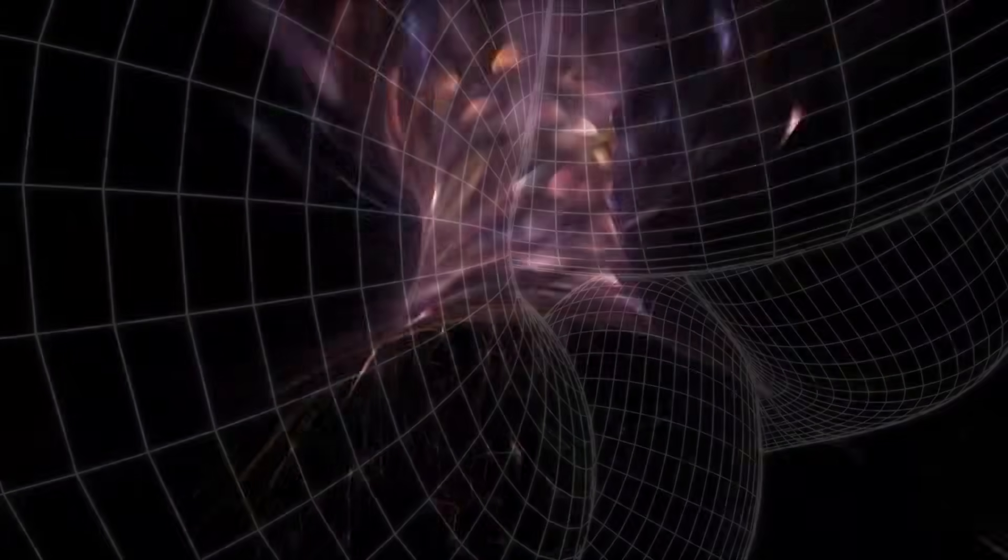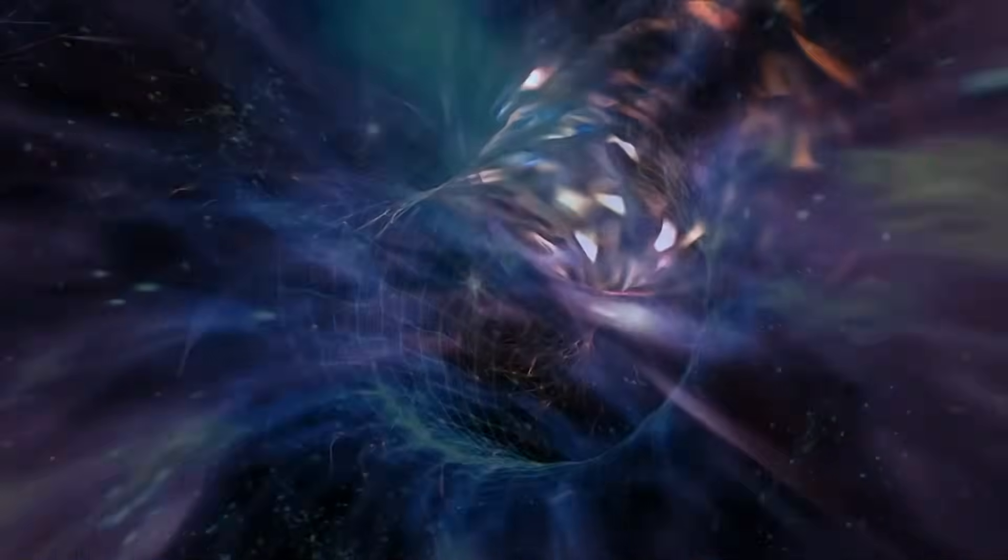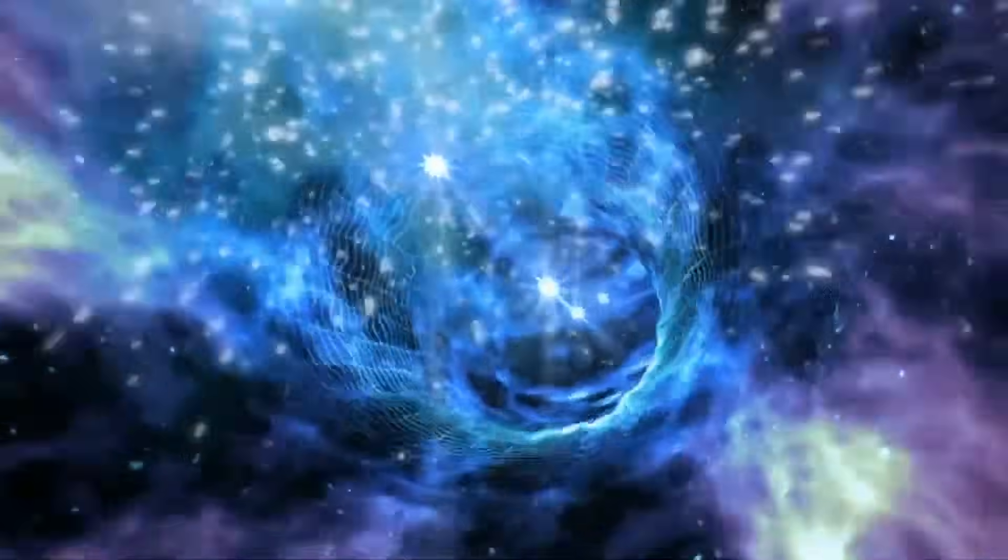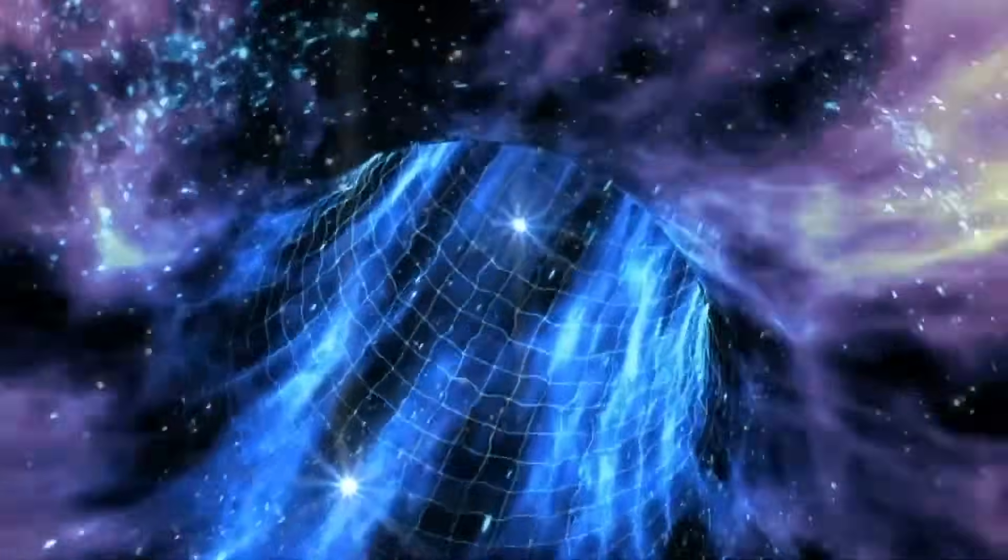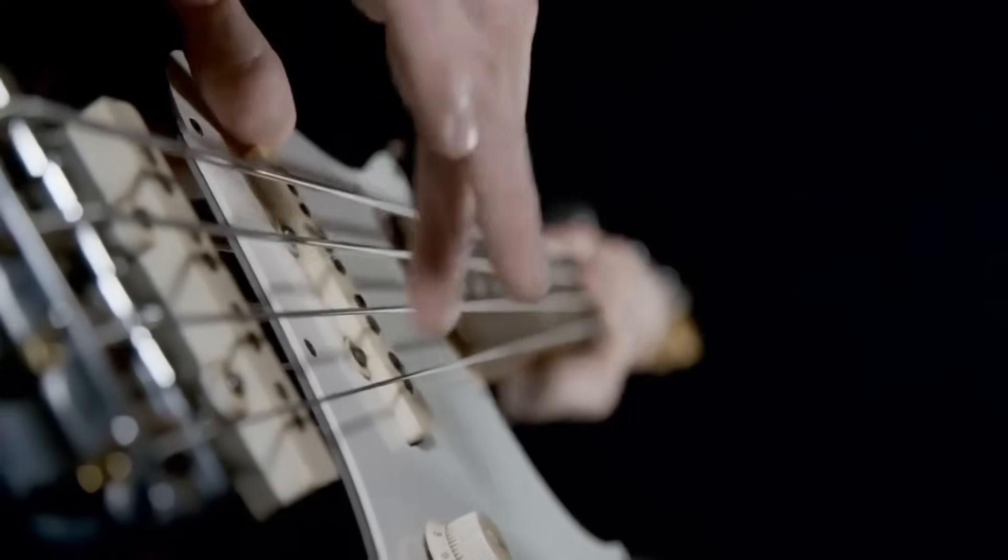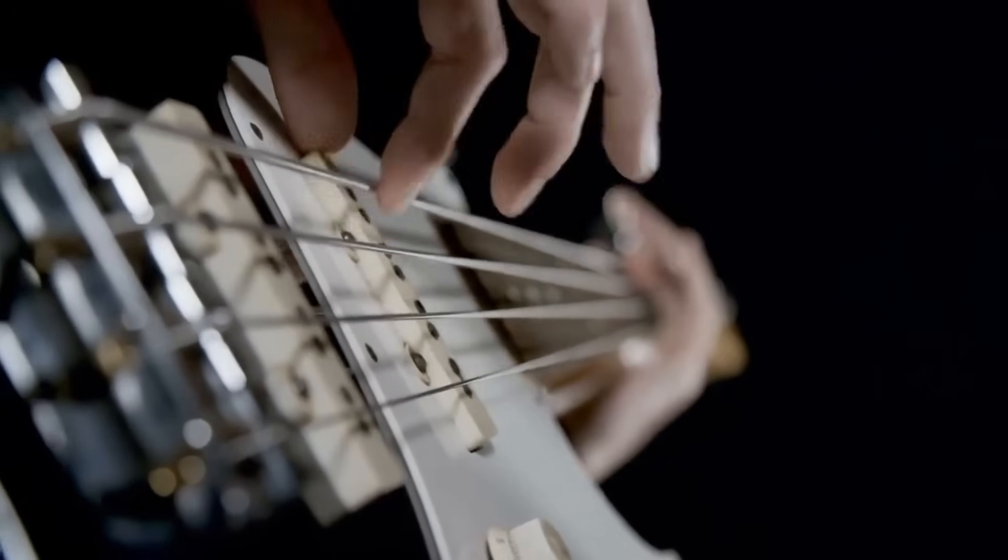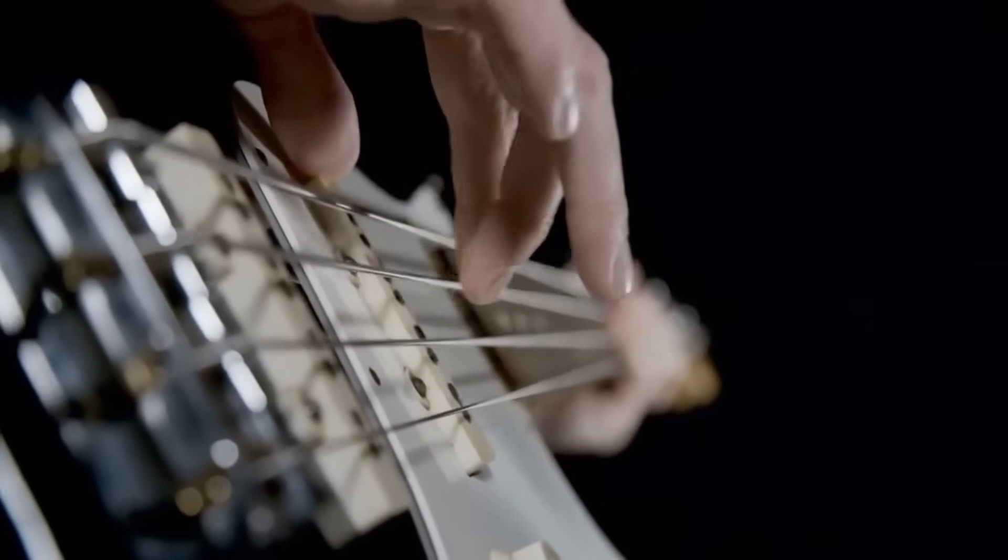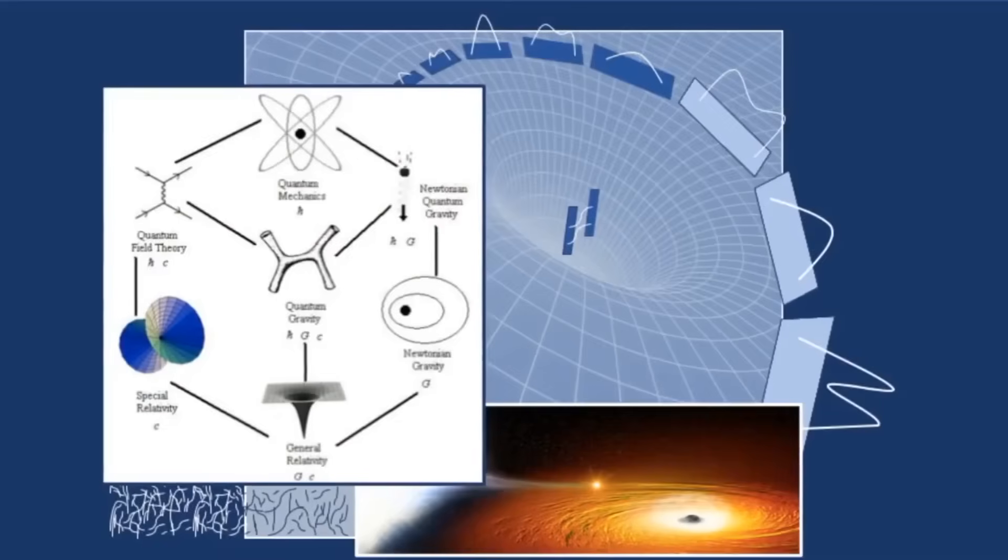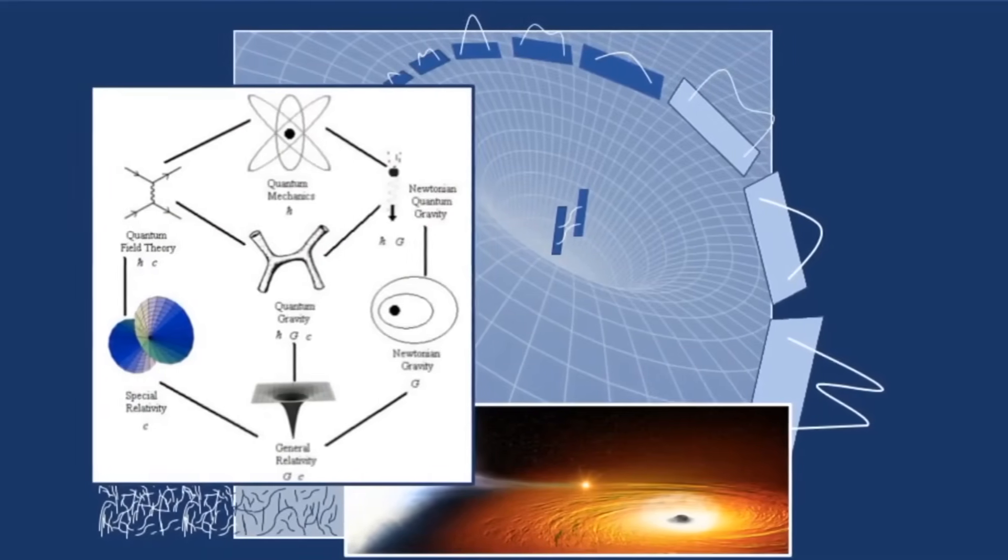String theory represents a radical departure from the particle-centric view of quantum field theory. In string theory, the fundamental constituents of the universe are not point-like particles but rather one-dimensional strings. These strings vibrate at different frequencies, akin to the harmonics of a vibrating guitar string, giving rise to a diverse spectrum of particles observed in nature.